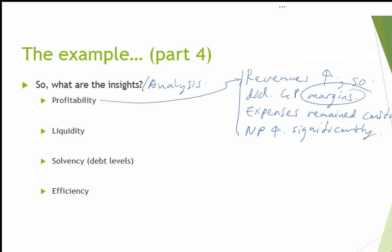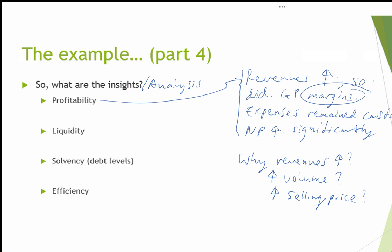Because the margins have improved and expenses remain constant, net profits increased. With greater margins but constant expenses, net profits have improved significantly. Notice that through these few statements regarding profitability, I already have the first paragraph of my report writing. Depending on word limit, you might want to go further and explain why revenues have increased — is it because of a greater volume of sales, or increases in selling price? An increase in selling price means you'll be generating more revenues than before.